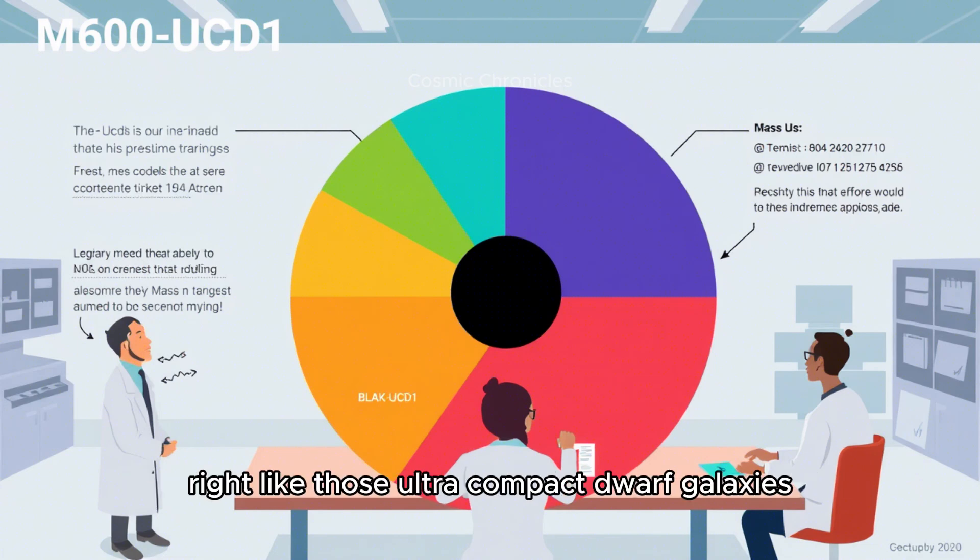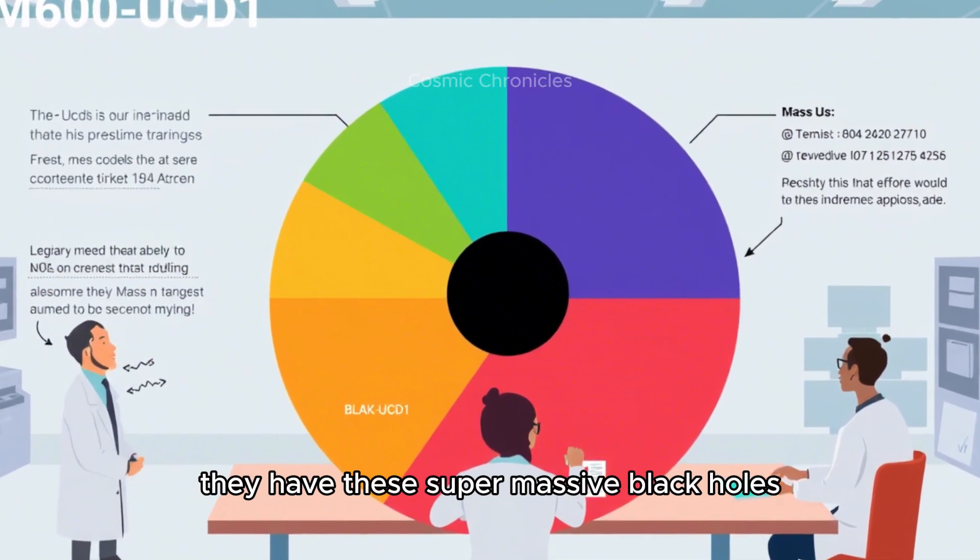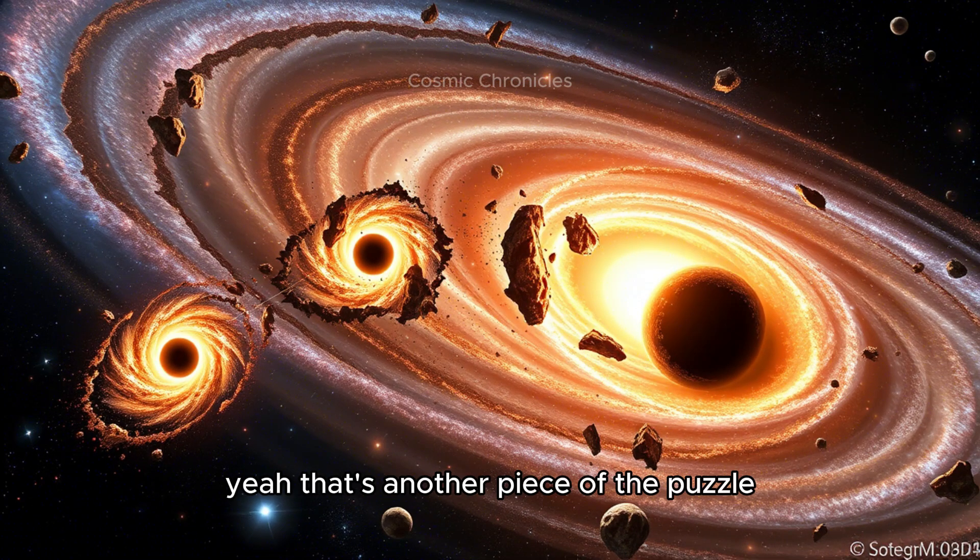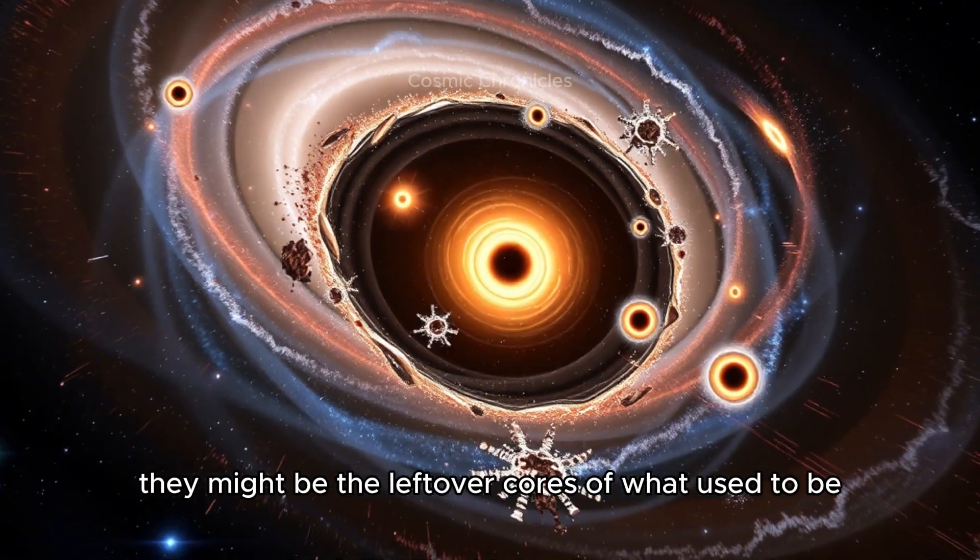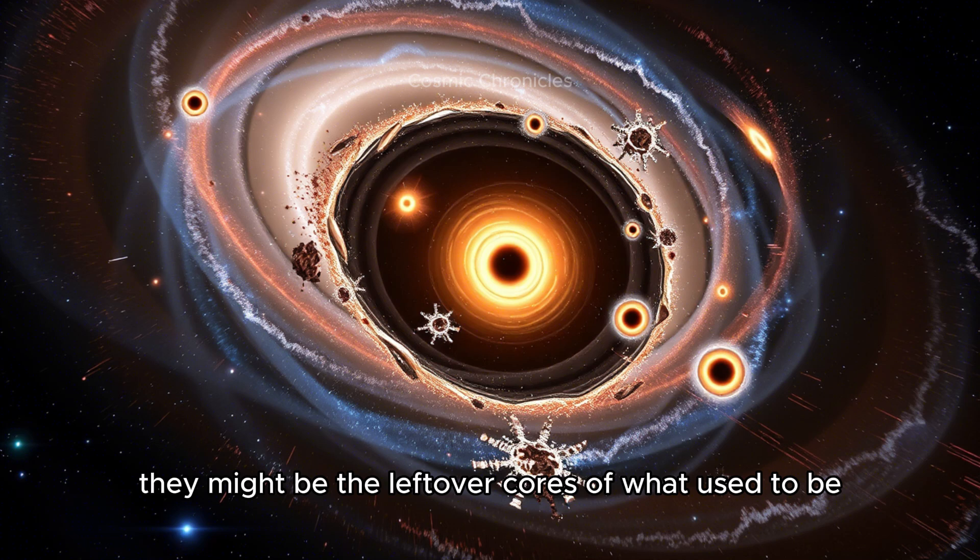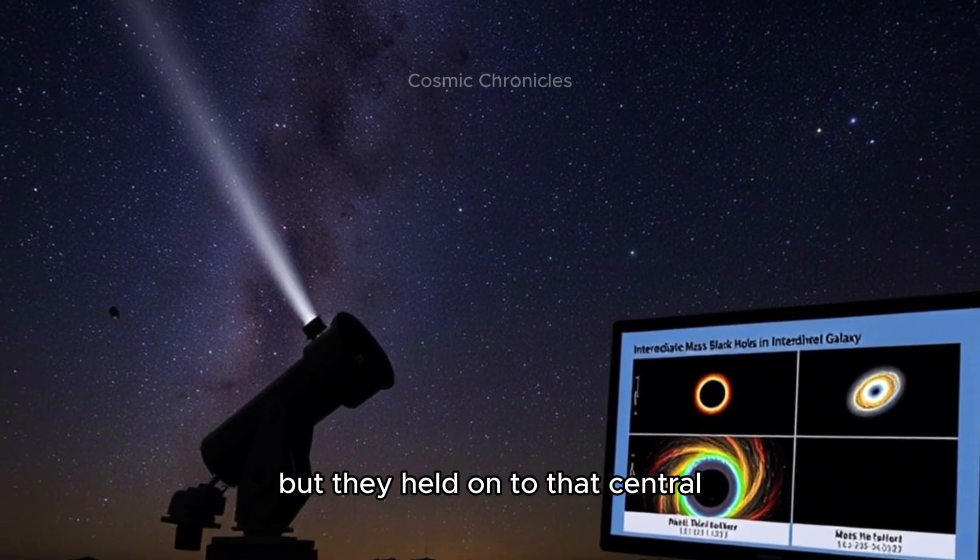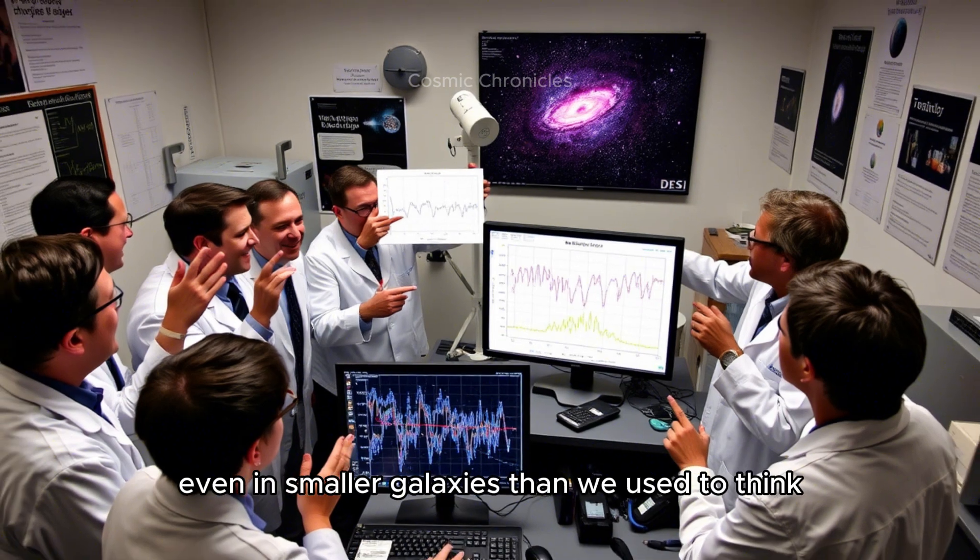We've seen hints of this in other research too. Those ultra-compact dwarf galaxies - M60-UCD1 comes to mind - it seems like they have these supermassive black holes that make up a huge part of their total mass, which always seemed a bit strange to me. That's another piece of the puzzle that's been really intriguing. One leading theory is that these ultra-compact dwarf galaxies might be the leftover cores of what used to be much larger galaxies. Maybe they went through huge tidal interactions with other galaxies and they lost most of their outer stars, but they held on to that central supermassive black hole.